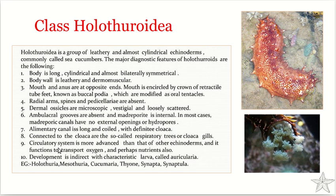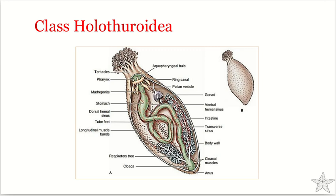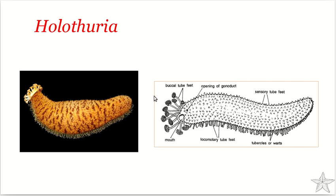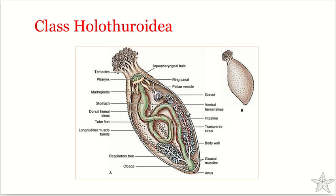The circulatory system is more advanced than in any other echinoderms, functioning to transport oxygen, nutrients, and waste. Most sea cucumbers are dioecious and possess a single gonad located anteriorly in the coelom, with a single gonopore near the base of the tentacles. Fertilization is usually external and embryos develop into planktonic larvae.